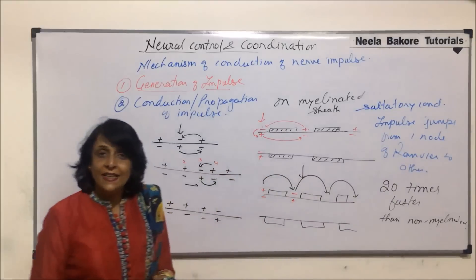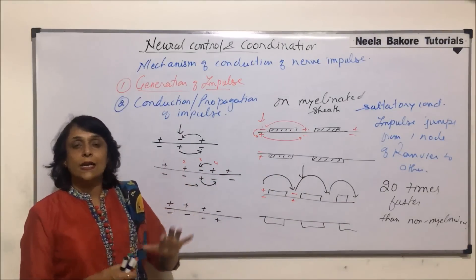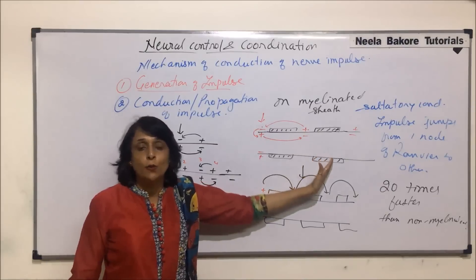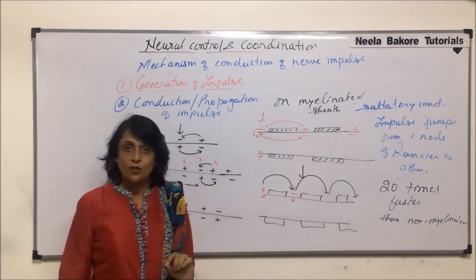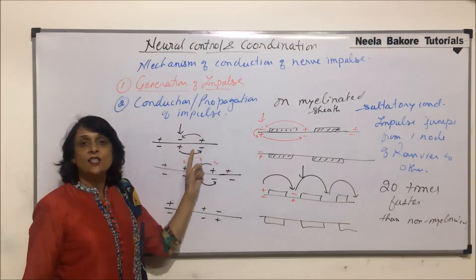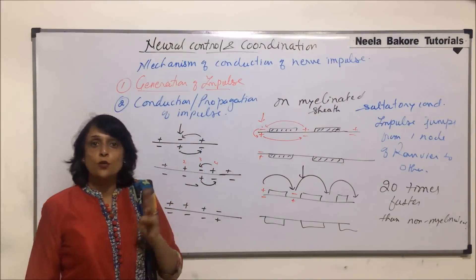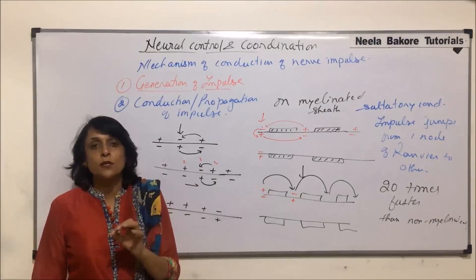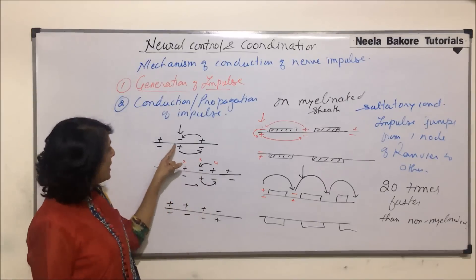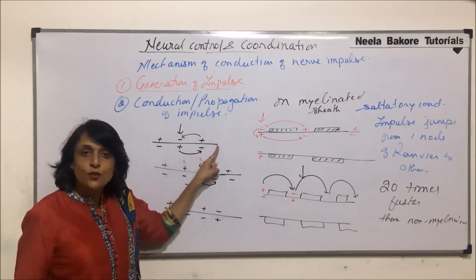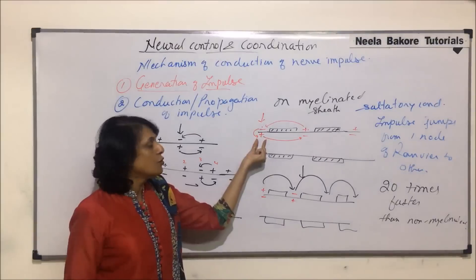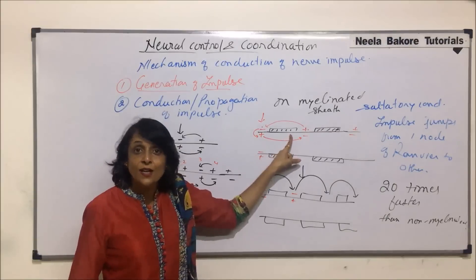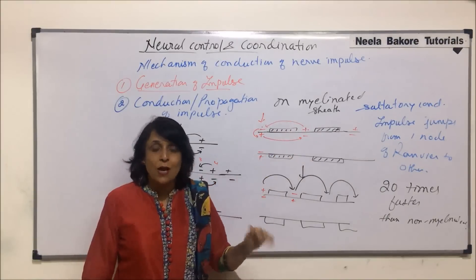Having a myelin sheath is advantageous for two or three purposes. First, the rate at which the impulse gets conducted is 20 times faster. Plus, wherever ion exchange is taking place, there are sodium-potassium pumps, and wherever those pumps are, ATP is required — energy is consumed at every point. Whereas on a myelinated fiber, energy is consumed only at the nodes. So there are no sodium-potassium pumps in between, making this a more energy-conserving process, and it is faster also.